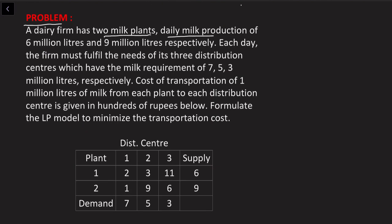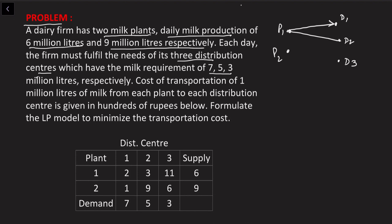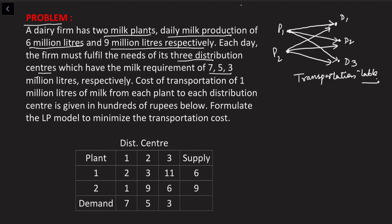In the next given problem, a dairy firm has two milk plants with daily milk production of 6 million liters and 9 million liters respectively. Each day the firm must fulfill the needs of its three distribution centers, which have milk requirements of 7, 5, and 3 million liters respectively. This is a supply problem - also called a transportation problem. Milk can flow from plant P1 to D1, D2, or D3, and similarly plant P2 can send supply to D1, D2, or D3.